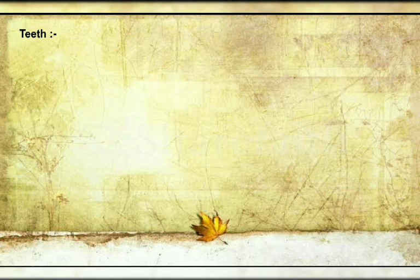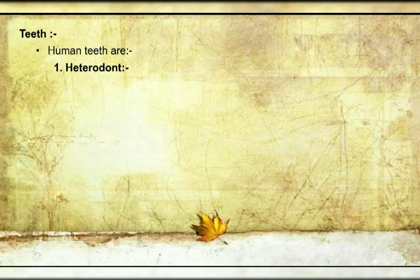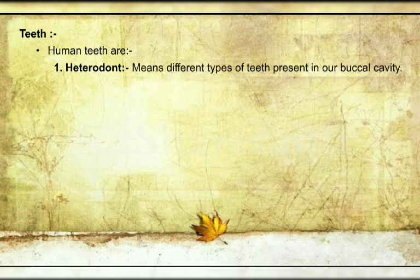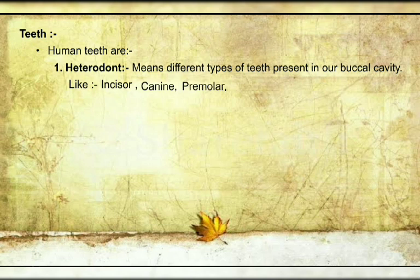Regarding teeth: enamel is the hardest part of our body, made up of calcium carbonate. Next, teeth are heterodont — 'hetero' means different, 'dont' means teeth — the teeth present in our mouth are different, not the same. For example: incisors — the work of incisors is cutting and biting of food. Second is canine — canine helps in the tearing of food. Next, premolars and molars — they help for mixing and grinding of food.